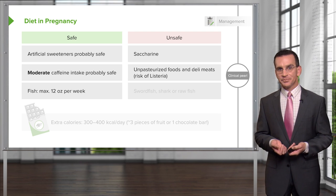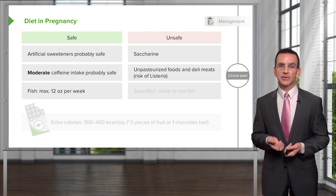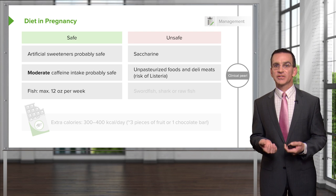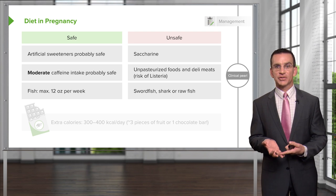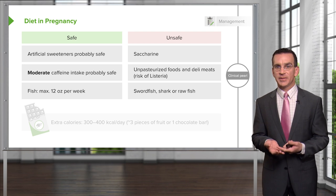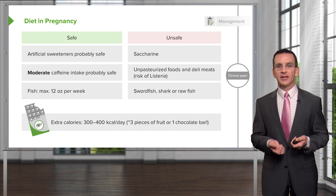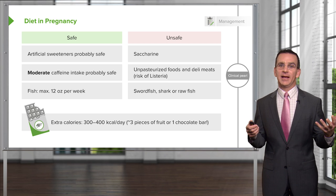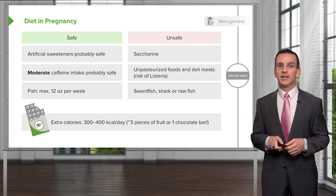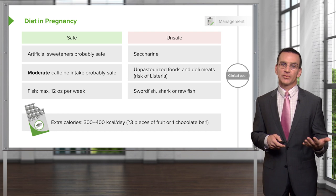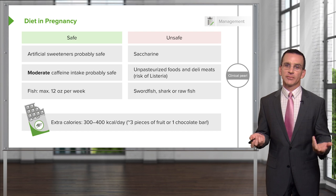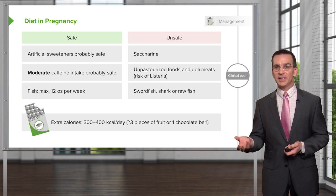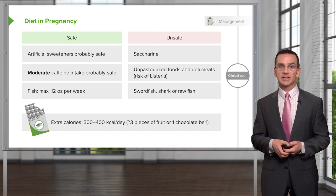Fish is possible to eat, but all seafood contains some degree of mercury, so the recommendation is a maximum of 12 ounces of fish per week. Certain fish with high mercury concentrations — swordfish and shark — should be absolutely avoided, as should raw fish due to the potential for contamination and infection. The extra calories required during pregnancy are about 300 to 400 per day — equivalent to three pieces of fruit or one candy bar — not excessive eating, which can contribute to obesity, gestational diabetes, and pregnancy-induced hypertension.